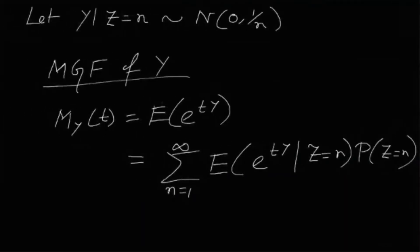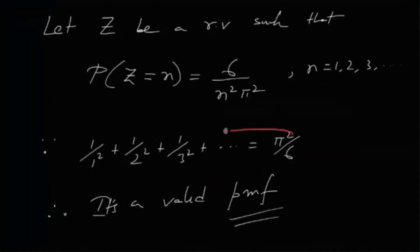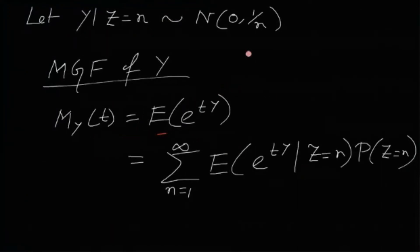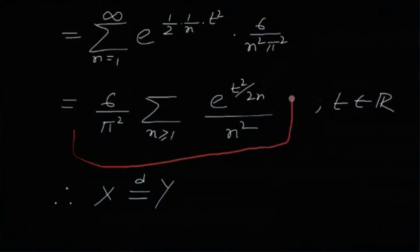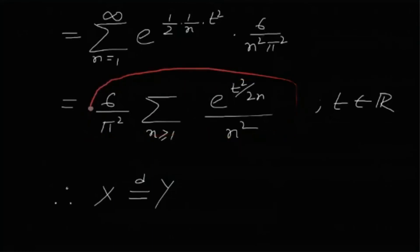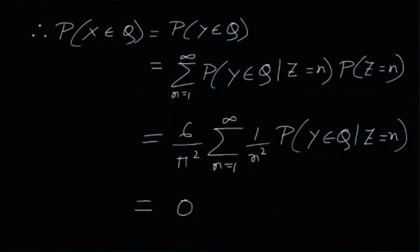So this is a very good problem. The MGF at first might not be an obviously known type, which makes it difficult. But if you notice the 6/π² and the 1/n² factor, you can see the connection. After defining the random variable Z and defining Y given Z, and calculating the MGF of Y, we found that the MGF of Y is exactly the originally given expression. Hence X and Y are identically distributed, and it follows easily that the probability of X belonging to Q is 0. That is the answer and the solution.